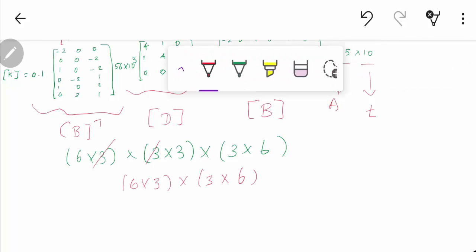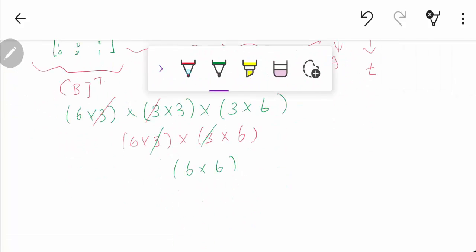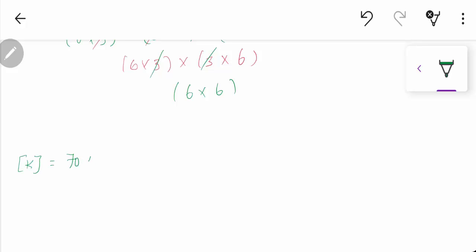You will get the resultant stiffness matrix as 6 by 6. This is the final value of the stiffness matrix.